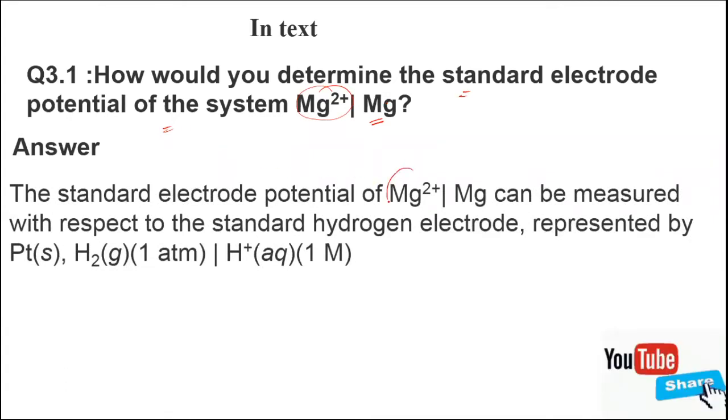The standard electrode potential of Mg²⁺|Mg can be measured with respect to the standard hydrogen electrode. As you know, the value of the standard hydrogen electrode is zero. It is represented by Pt(s), H₂(g)(1 atm)|H⁺(aq)(1 M).